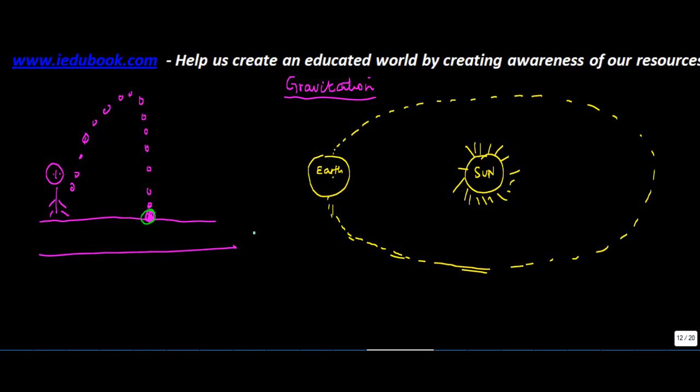Similarly, you have moon which keeps on rotating around earth. So have you ever noticed as to why this happens? Why is it that whenever you throw something towards the sky, let's say this is the sky, it comes back down.